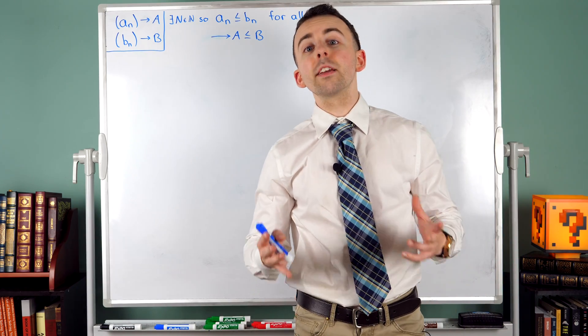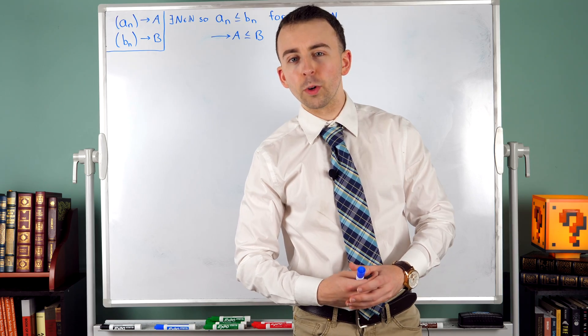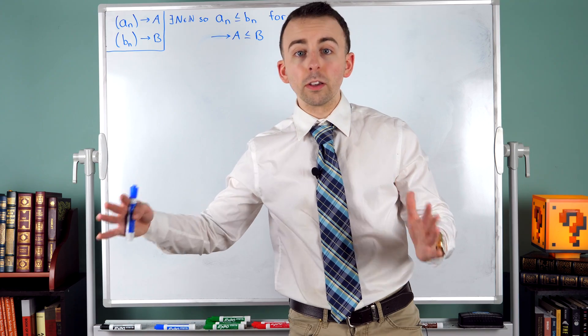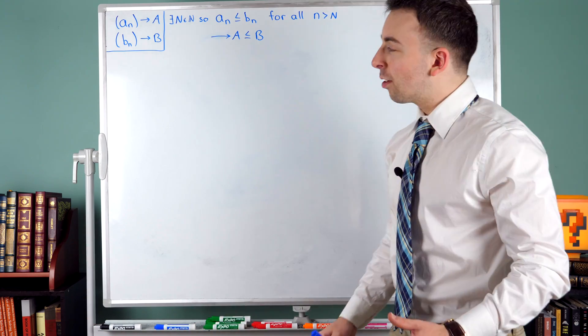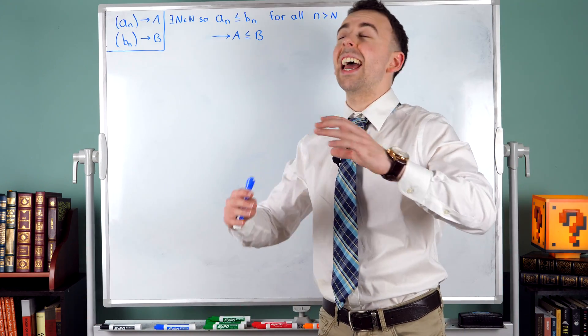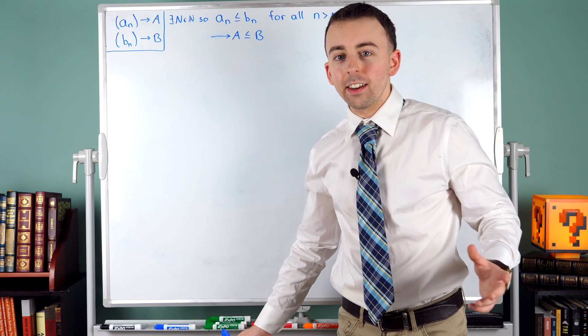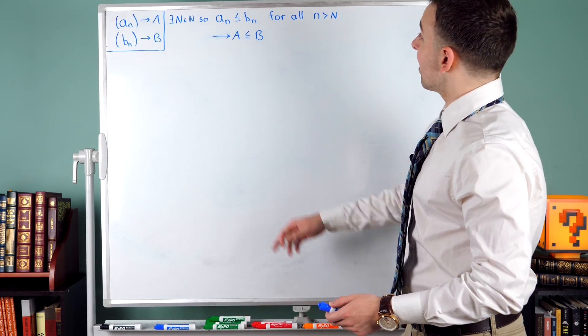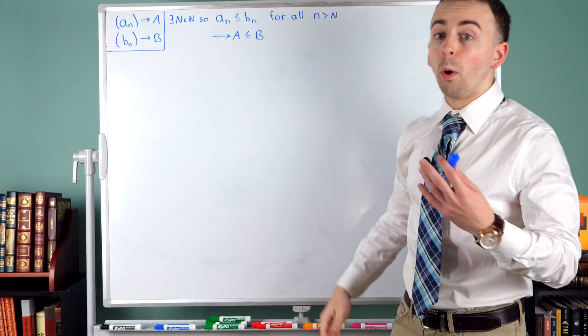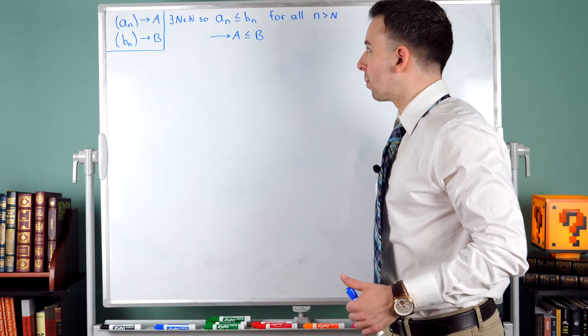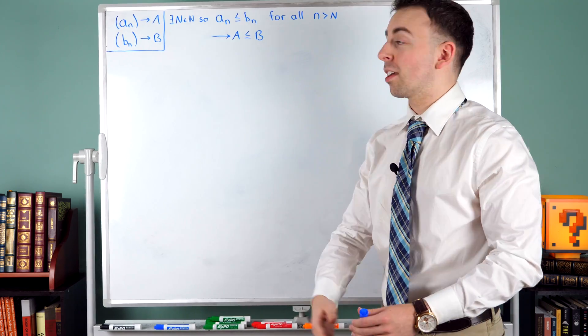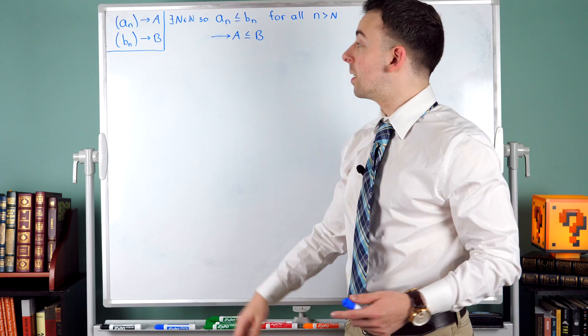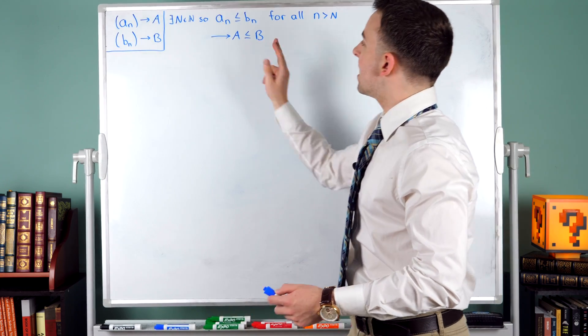And in fact, something stronger than that is true. When we're talking about convergent sequences, what really matters is their long-term behavior. So we don't actually need every term of An to be less than or equal to Bn. All we really need is every term of An after a certain point to be less than or equal to Bn. That still gives us the conclusion that the limit of An, A, is less than or equal to the limit of Bn, B.